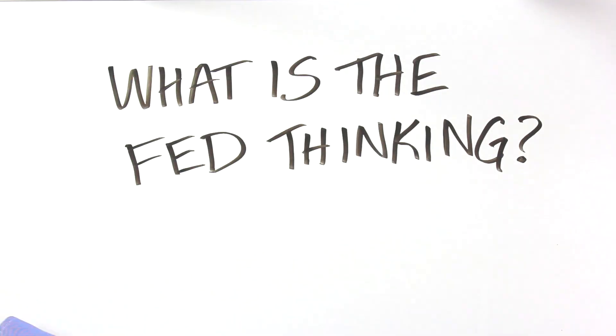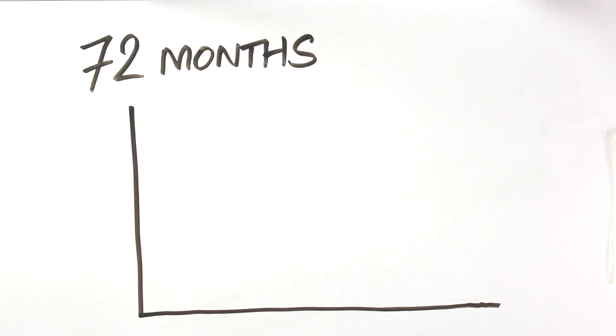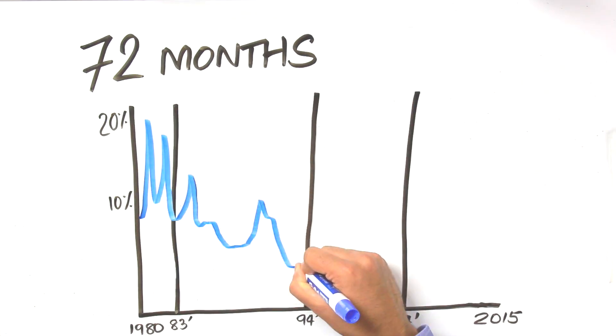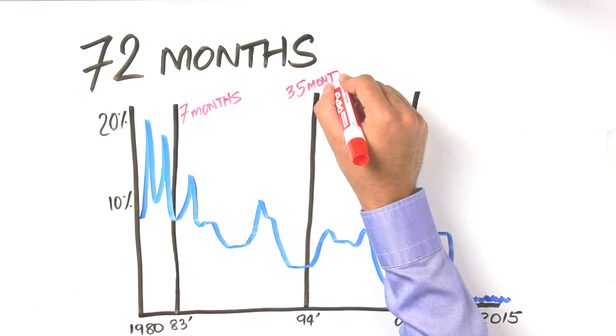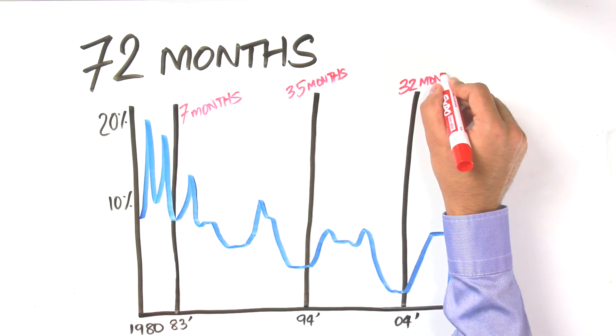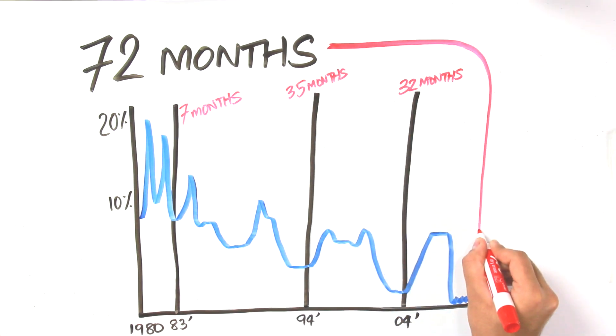It's been 72 months since the end of the recession and the Fed has still not hiked rates. This is unprecedented. In the 1990s, it took the Fed 35 months to raise rates and in 2004, it only took them 32 months. So what is going on?